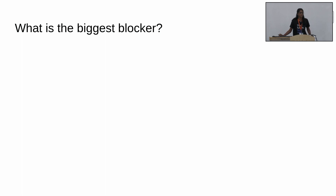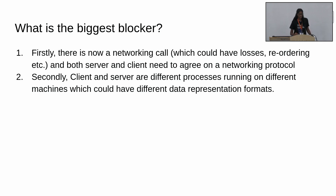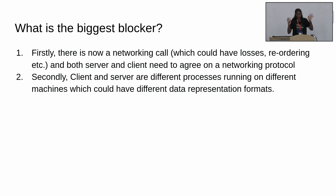What is the biggest blocker if you want to do a remote call to code on another machine? A normal function call involves the call stack and that's it. But for a remote call, the moment you have two programs running on two different machines, you need a network call — and the network call comes with its own issues: losses, reordering, etc. Both machines need to talk with some agreed protocol, whether TCP or something else.